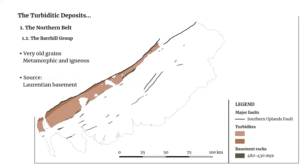The second group deposited contains very old grains whose source were the ancient basement rocks of Laurentia. This source is more likely to have been located in today's Canada rather than the Grampian terrain of Scotland, because for the grains to have travelled from the Grampian terrain they should have crossed the Midland Valley first, where grains of that age are very scarce in the south across the Southern Uplands Fault.